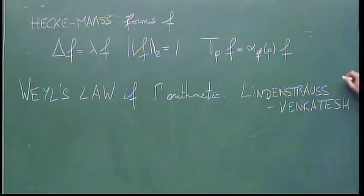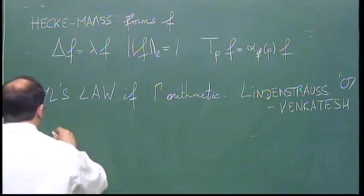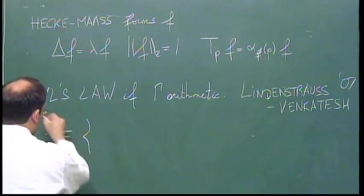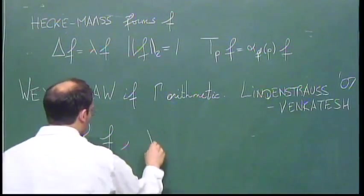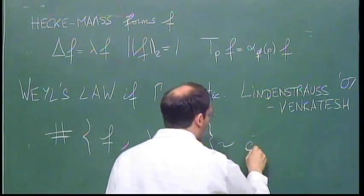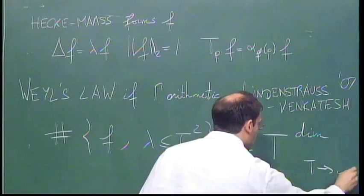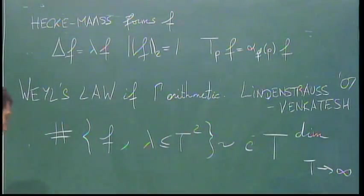So what they show is a number, this is the Weyl law, number of all such F, eigenvalue less than some T squared, is asymptotic to a constant, which is essentially the volume, T to the dimension.